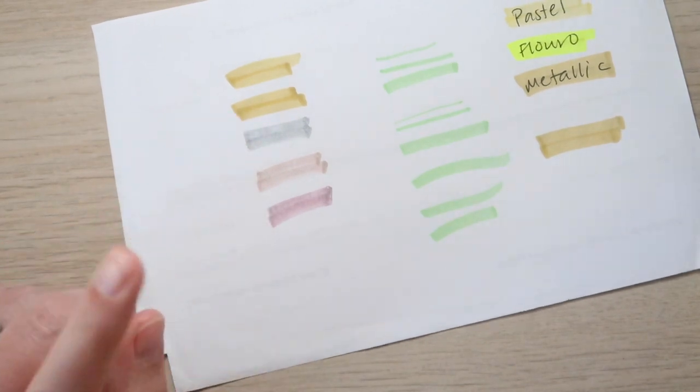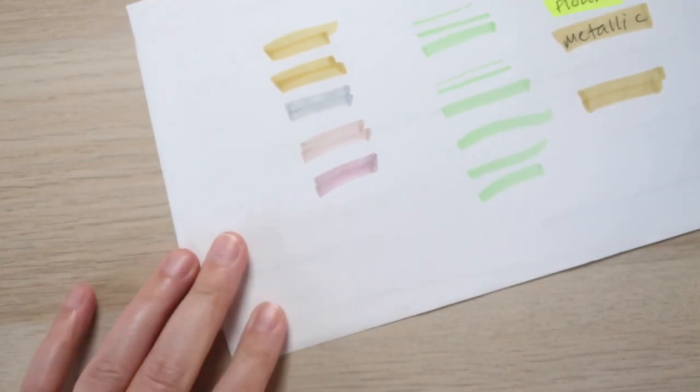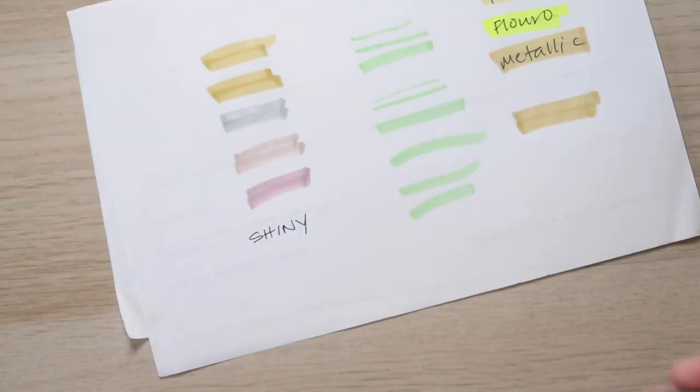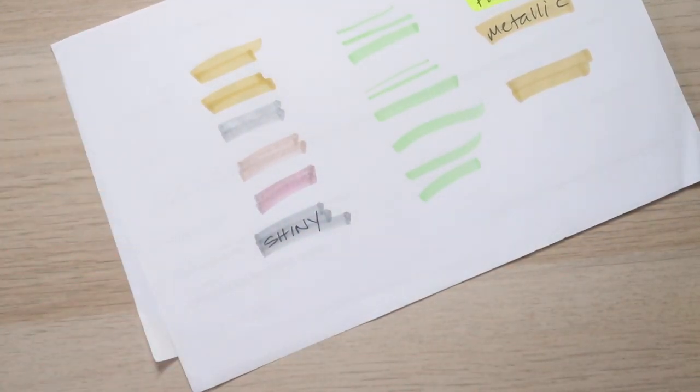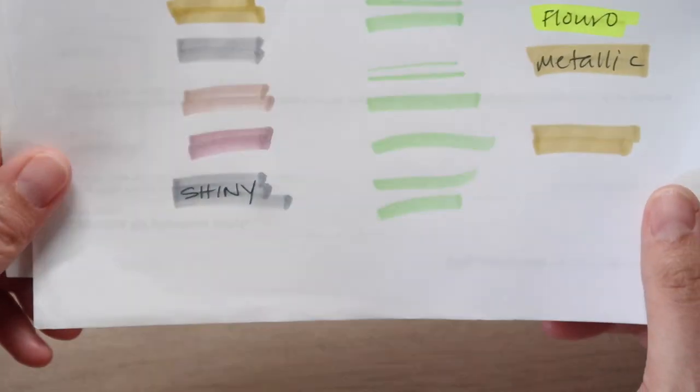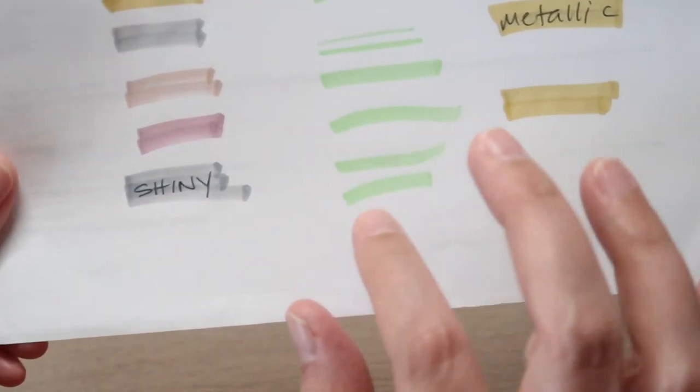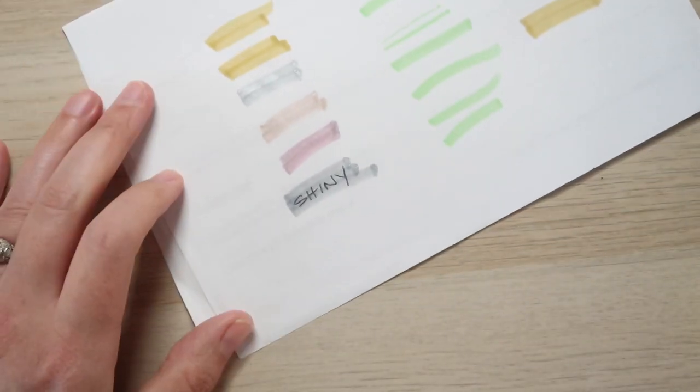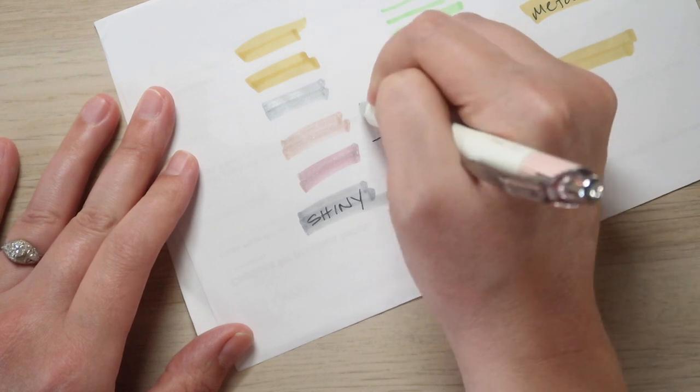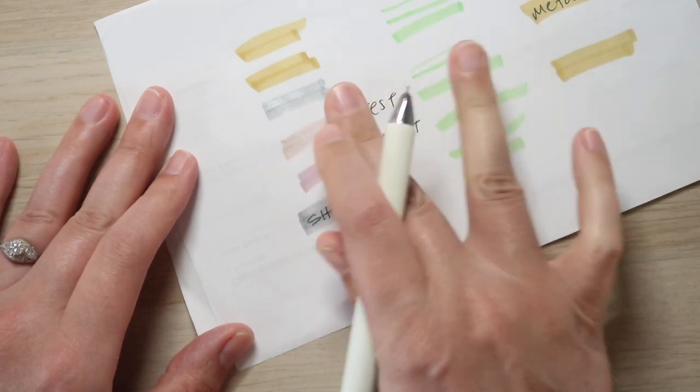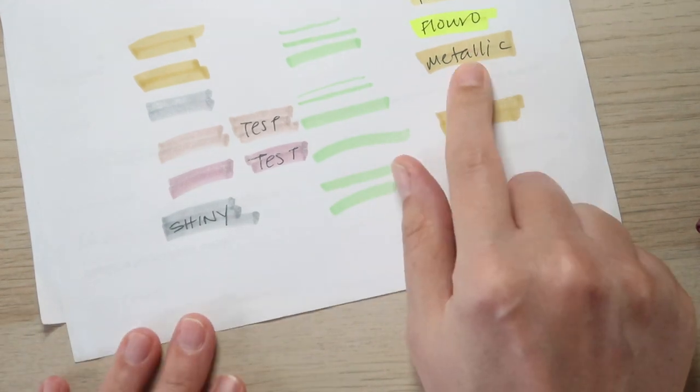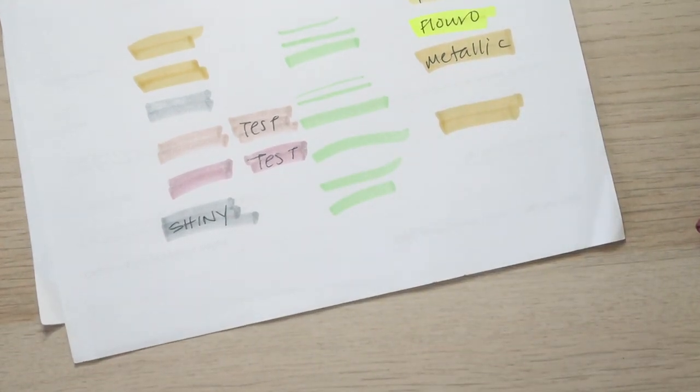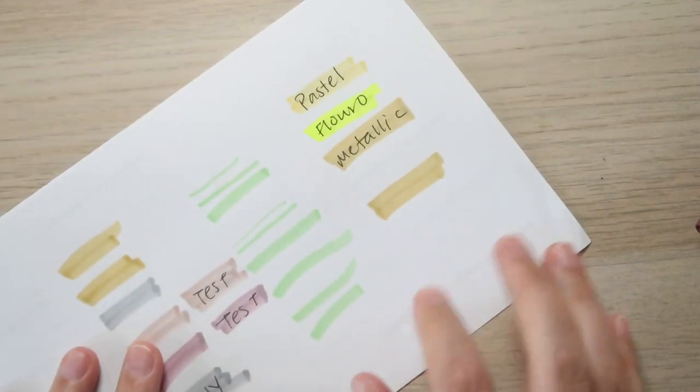But then I guess the question is, for these shinier ones, how well do they highlight? Take the silver puppy over it. Oh, you could still read it. It is slightly more obscured because of the glitter. Let's see here. Let's just test these two colors as well. Because now I'm super curious. Yeah, you can still read with the shiny highlighters. They're just shinier. So yeah, the gold out of these ones seems to be the most kind of garbo of the three.